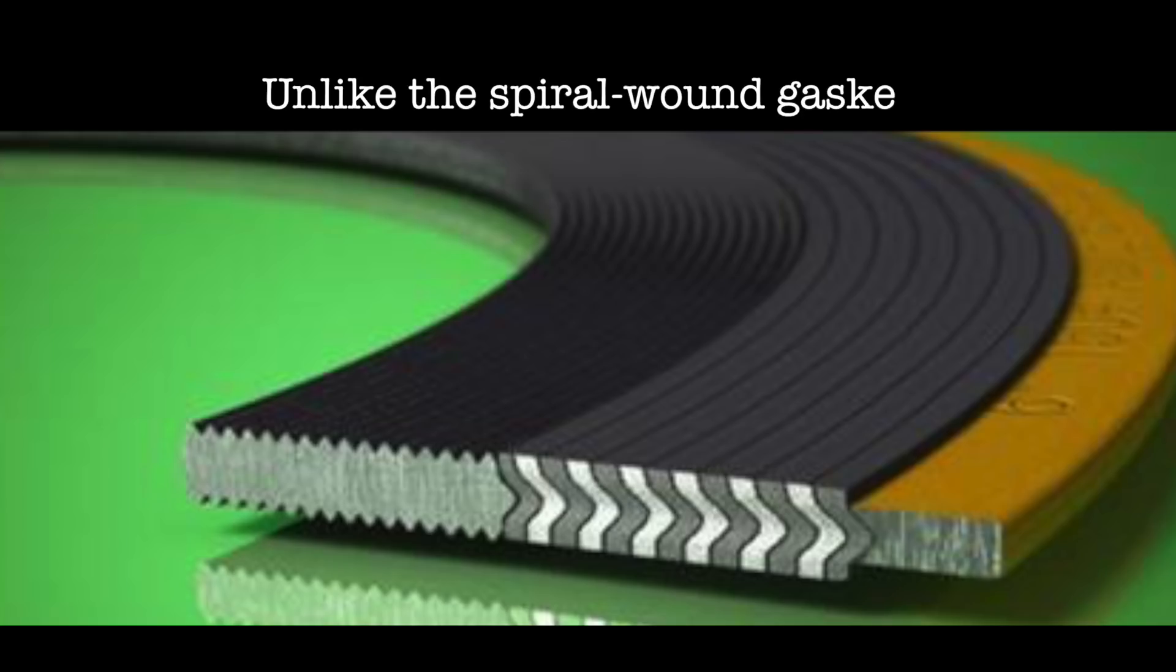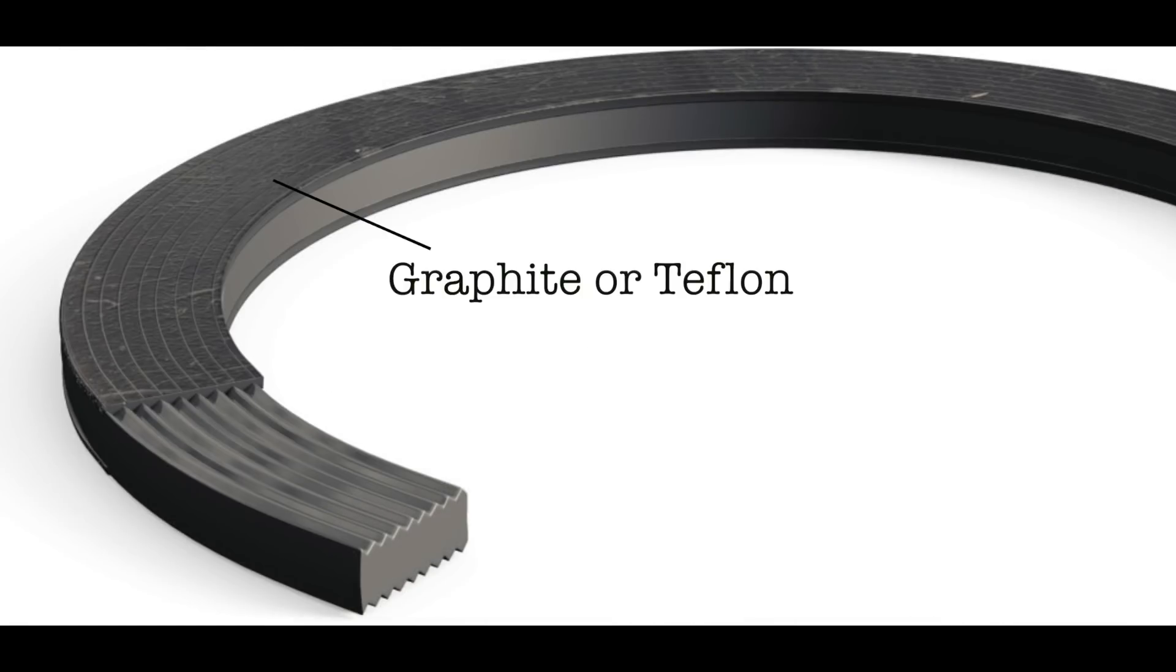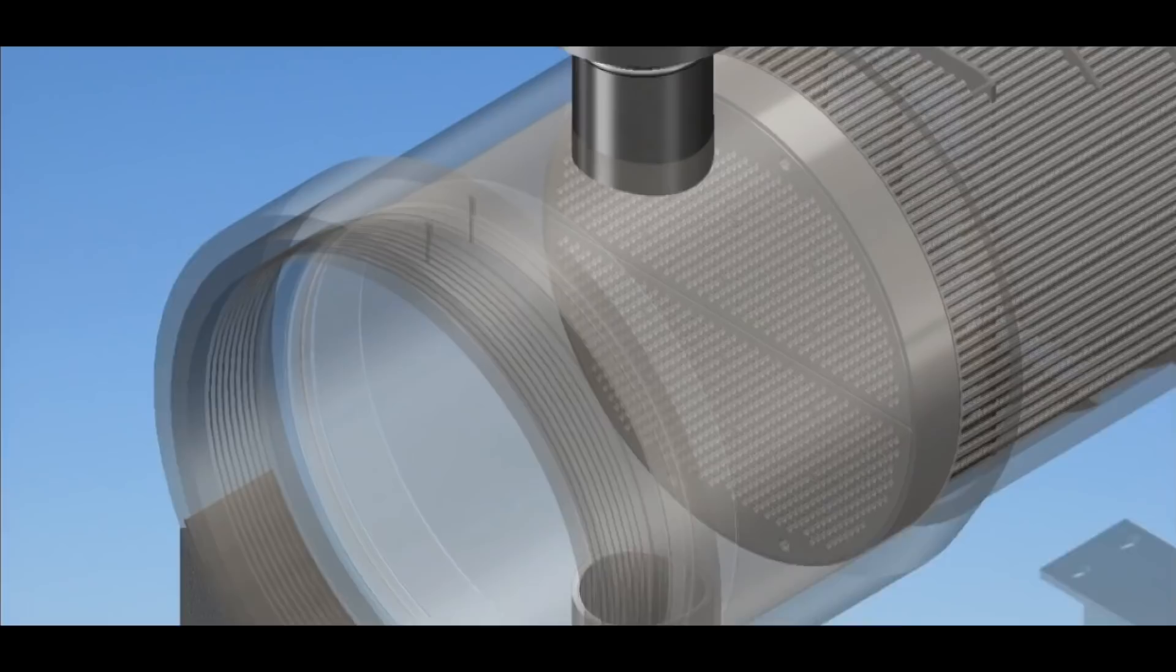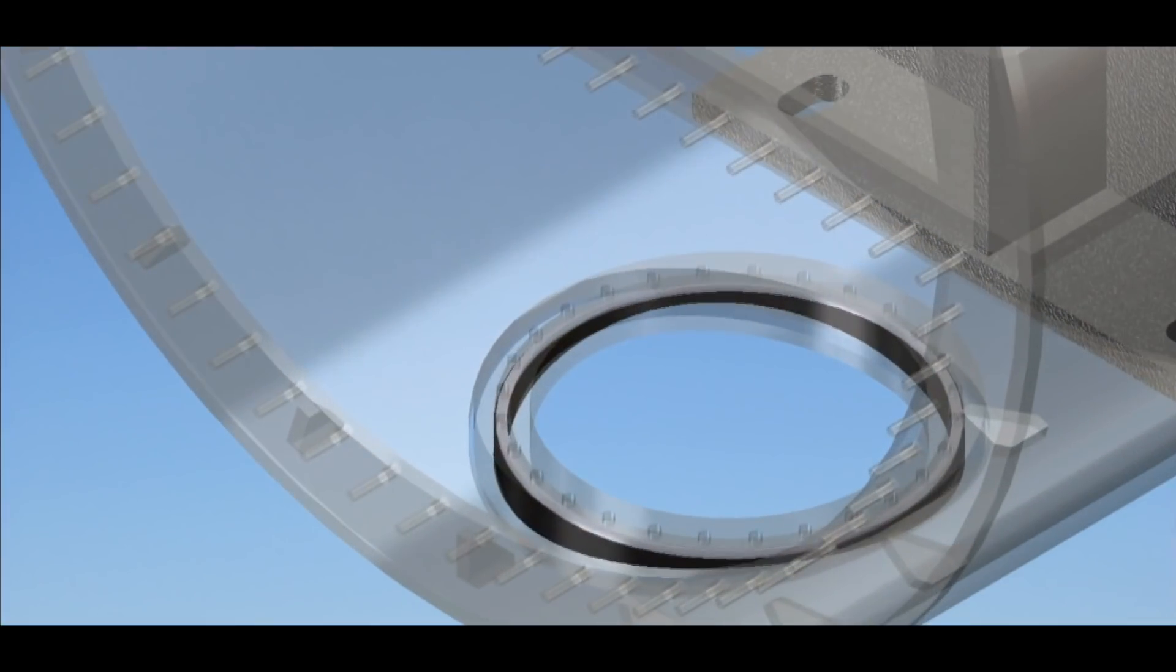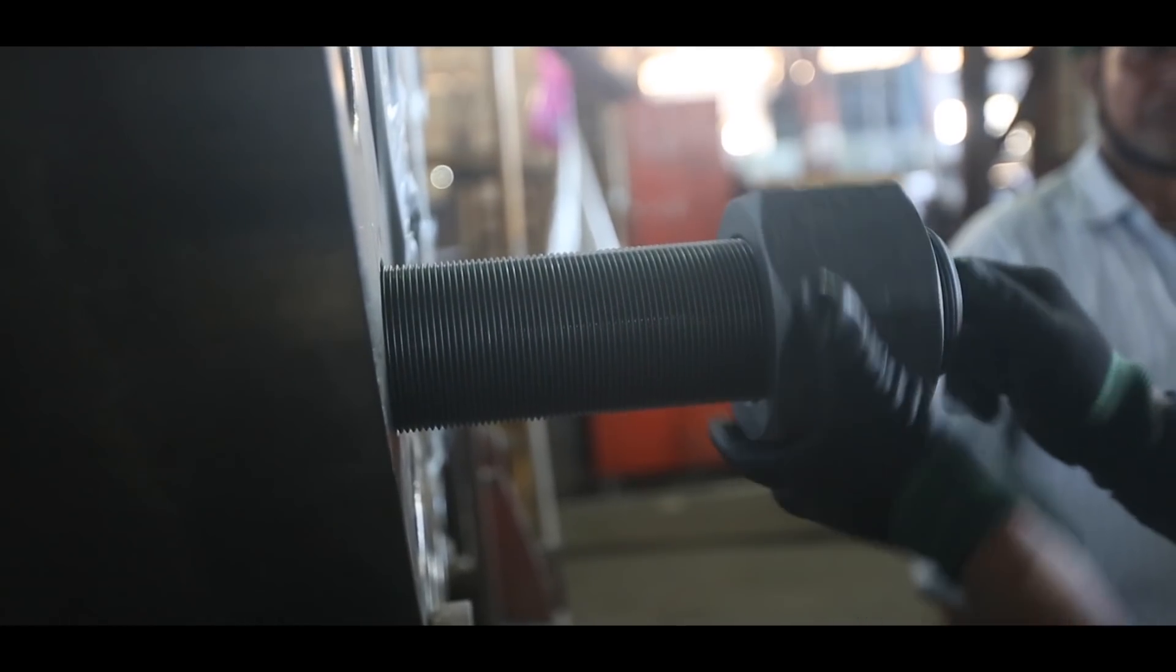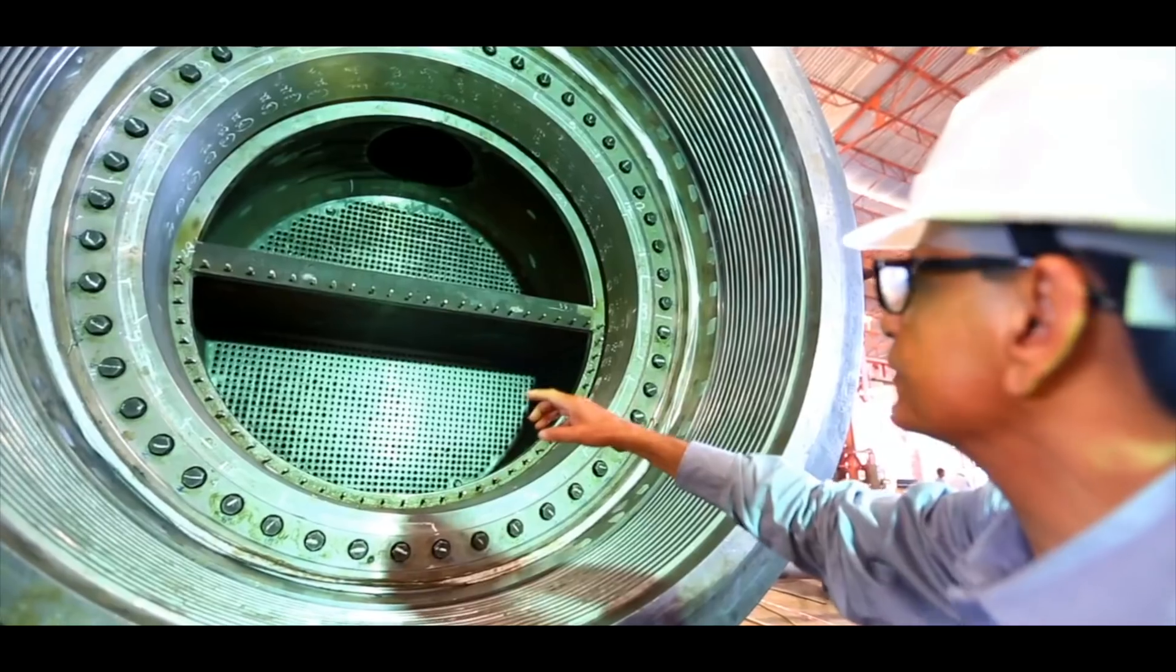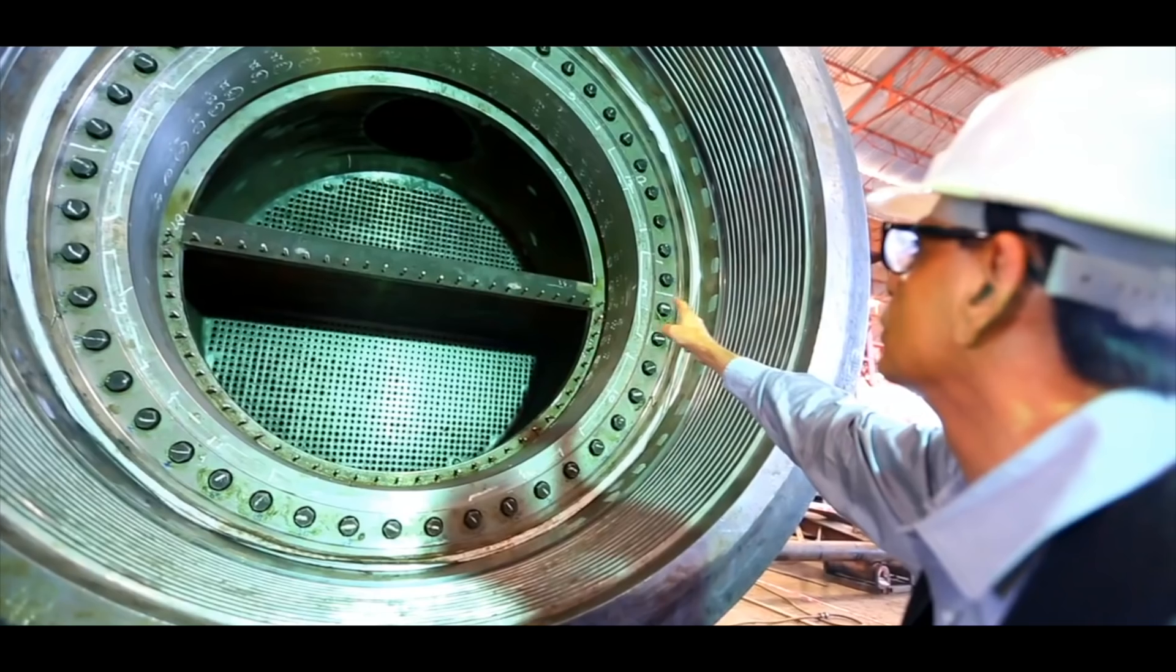Unlike the spiral wound gasket, cam profile being a solid metal layered with epoxies such as graphite or teflon, it has to be uniformly loaded, a task that demands technique and experience. For uniform loading, the tightening procedure was devised not with respect to torque, but with the actual load the bolts exerted on the gasket.